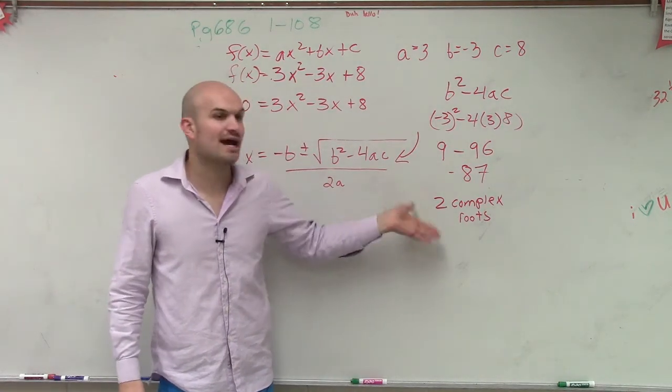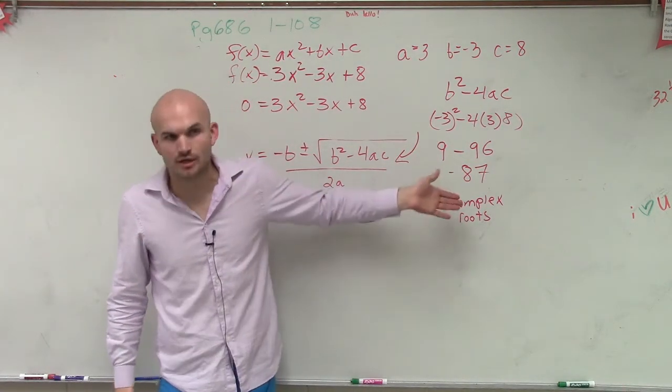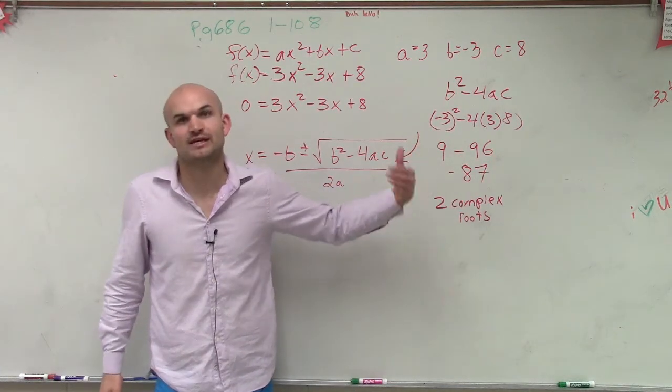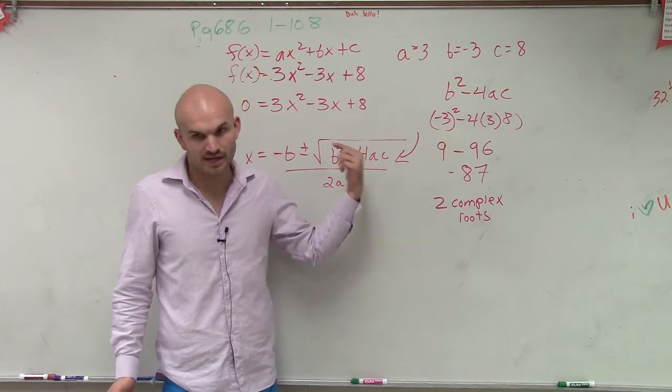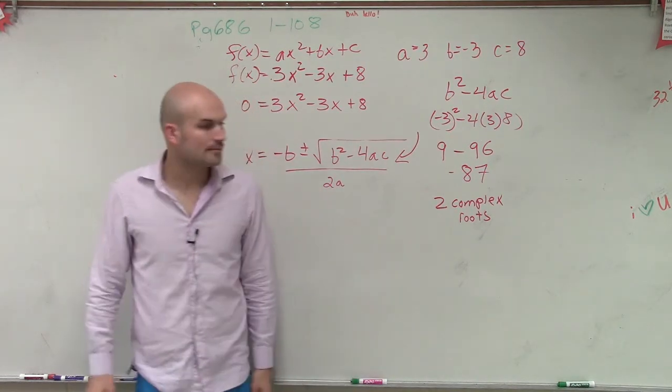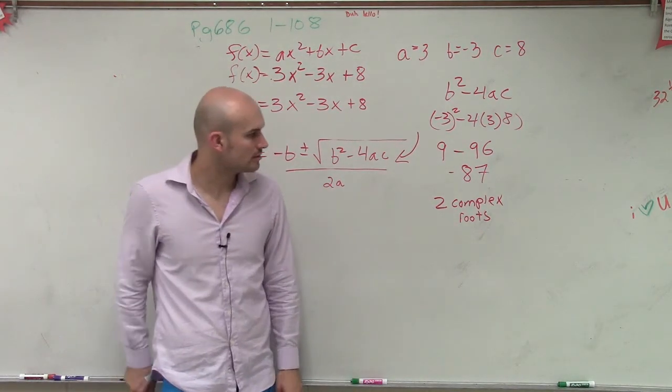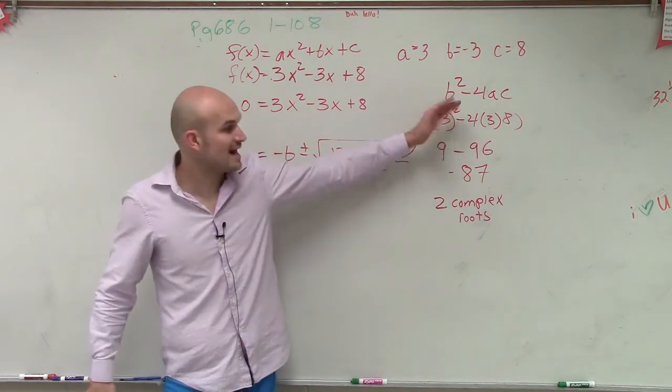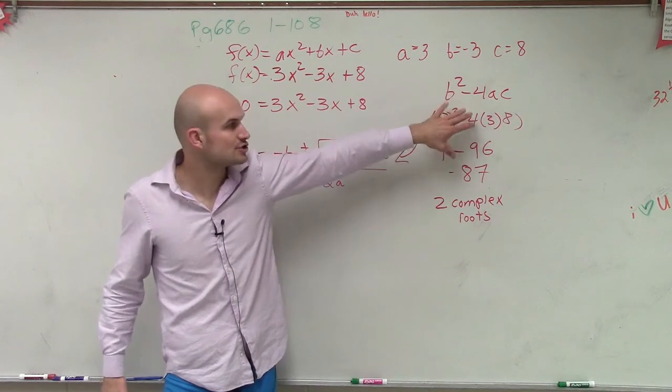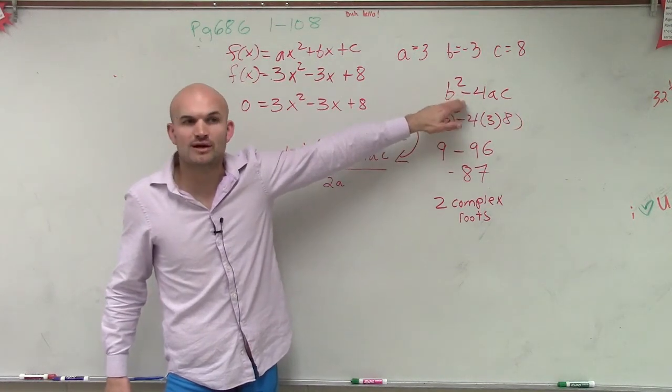But every single time, you're always going to have two complex roots, or two real rational, or two real irrational. But it's always going to be 2, unless that number is 0, then it'd just be one real root. So to determine that, you're going to want to use this, which we call the discriminant.